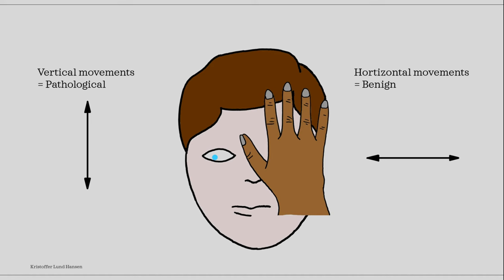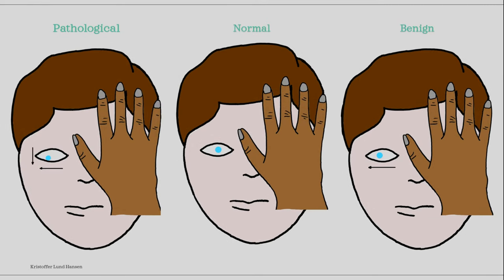Not everything means that there is something wrong. What we are looking for are those cases where the eye is vertically out of place — those can mean that there is something wrong. If the eye is horizontally out of place, however, there is nothing to be alarmed about, as this can happen in many benign conditions. In many cases the eye isn't misaligned purely horizontally or vertically. If you look at the screen, we have three different examples: from left to right, there is a pathological case, a normal case, and a benign case.